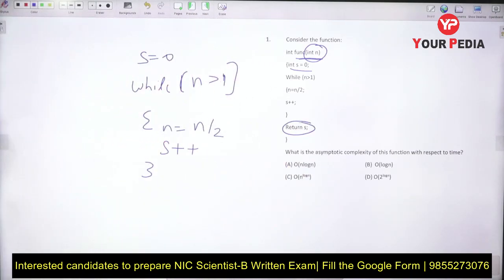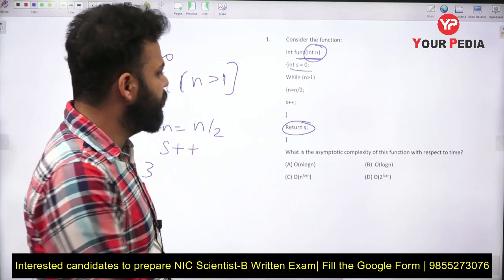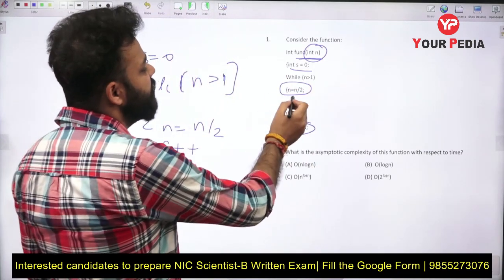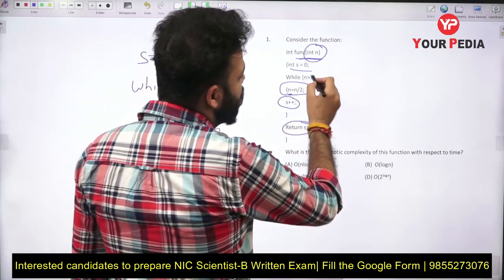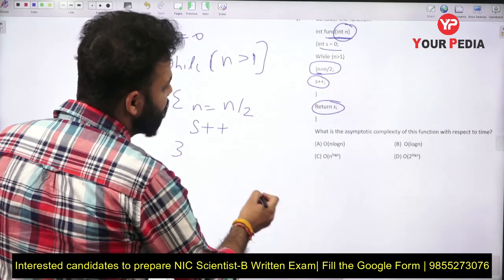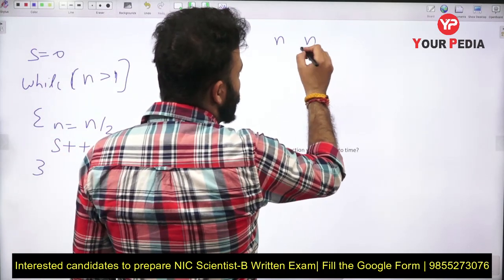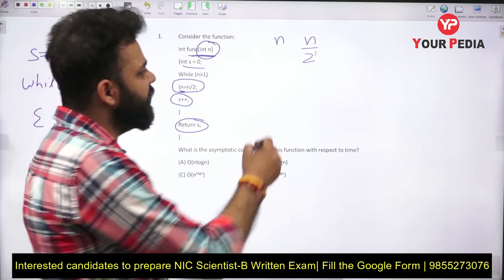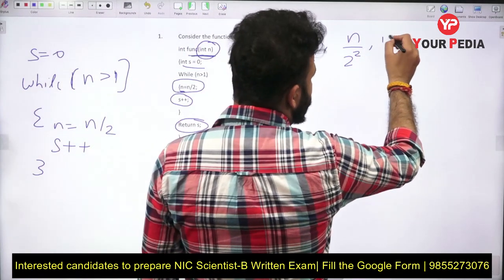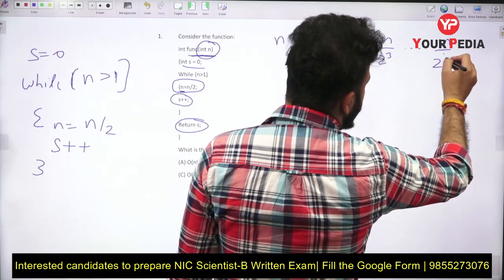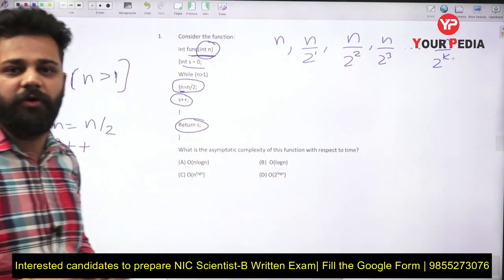The value of s will always be equal to the number of times the loop runs, because if the loop runs 100 times, s is incremented 100 times. We need to find how many iterations it takes to go from n down to 1. After the first iteration the value is n/2, which is n/2^1. After the second iteration it is n/2^2, after the third n/2^3, and so on up to n/2^k.